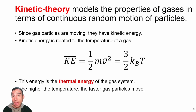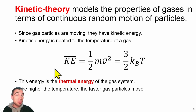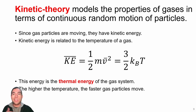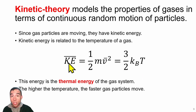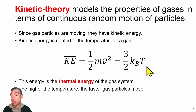Since gas particles are moving with a velocity they have kinetic energy. Kinetic theory relates energy to a gas system. The kinetic energy is normally one-half mv², but since we have many particles with many different velocities, we calculate the average kinetic energy for the whole system. The average kinetic energy equals three-halves the Boltzmann constant times the temperature. In other words, the higher the temperature, the faster the gas particles move and the more energy the system has.